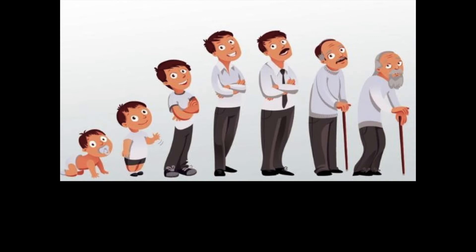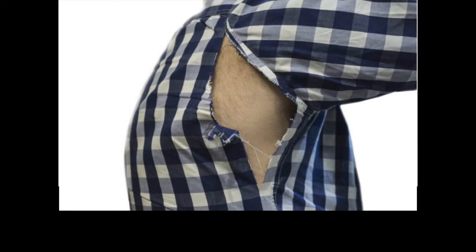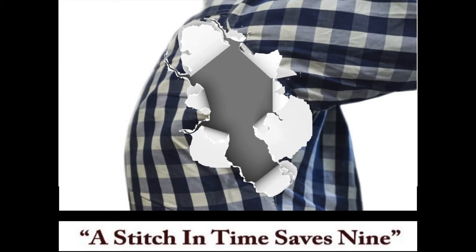Age of the patient is also a very important deciding factor — the younger the patient, the better the result with repair. Simple tear patterns like vertical tears are very good to repair, while radial tear patterns and complex tear patterns are not ideal for repair. The time duration of meniscus injury is also a very important factor. Just as with a torn shirt — a stitch in time can save it completely — but if ignored, it gets torn on multiple sides and is completely destroyed.